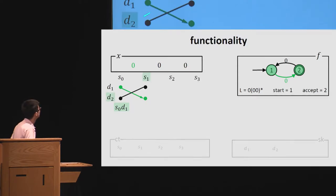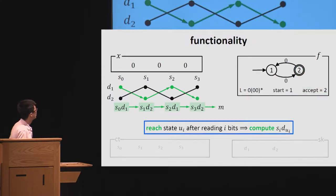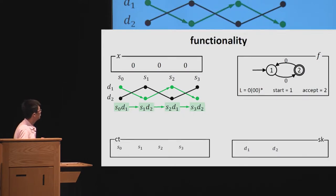So this basically corresponding to these values. So actually, we need to compute S1, D2 from S0, D1 we have obtained. So then we continue this process, compute S2, D1, S3, D2, according to the state we can reach in each step. Then finally, we will reach these values. And the state two is the accept state. So it should use this value to recover the message. So generally, we will do this. If we can reach UI after reading i bit, then we will compute these values.